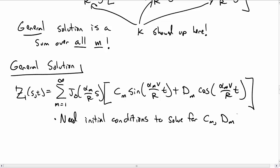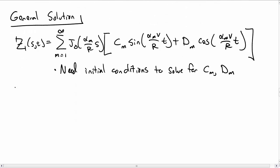We're interested in solving the wave equation on a circular membrane, and in previous videos we used separation of variables to turn that into ordinary differential equations, and we came up with this general solution for z, the height of the membrane of the drum that we're interested in that's vibrating. So now we need some initial conditions to solve for the arbitrary constants c sub m and d sub m in our general solution.